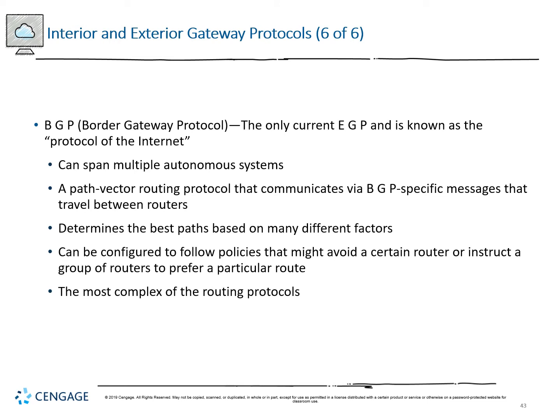BGP — Border Gateway Protocol — is the protocol of the internet and the only current EGP implementation. It spans multiple autonomous systems and is a path vector protocol communicating via BGP-specific messages between routers. It can be configured to follow policies that avoid certain routers or instruct a group of routers to prefer a particular route — called route weighting. It is the most complex of the routing protocols, as you would expect for the outer hierarchy.